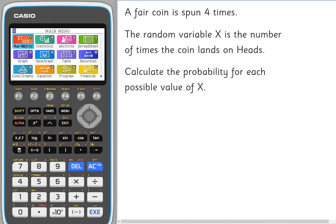The problem we're going to look at involves spinning a fair coin four times and the random variable X is the number of times the coin lands on heads. You need to calculate the probability for each possible value of X, so X could be zero, one, two, three, or four. Rather than do five calculations, we're going to do that all in one go.